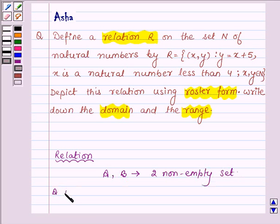Then a relation R from the two non-empty sets A to B is a subset of the Cartesian product A cross B.